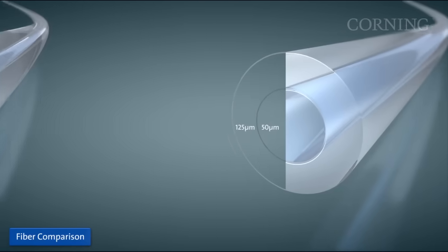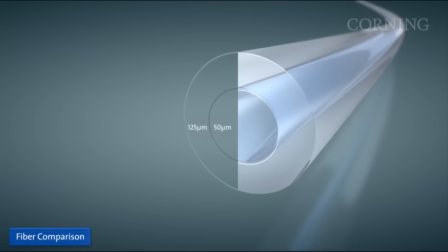Multi-mode fiber has a larger core, which allows light to travel down many paths simultaneously. Typically, multi-mode fiber is deployed in data centers, local area networks, and storage area networks, where it is more cost effective than single mode fiber.